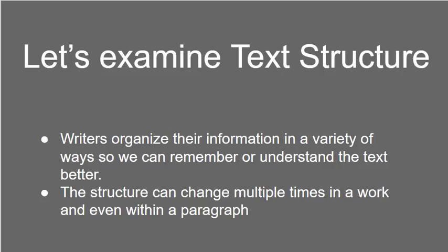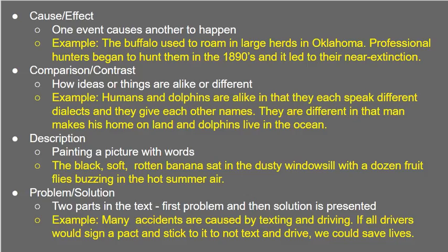Let's first talk about text structure. Whenever an author is writing information, they do it in a variety of ways so we can remember or understand the text better. For example, they might write it in chronological order, or they might use some of those structures of the text that we talked about. The structure can change multiple times in a work and even within a paragraph. I have some examples and definitions here for you.